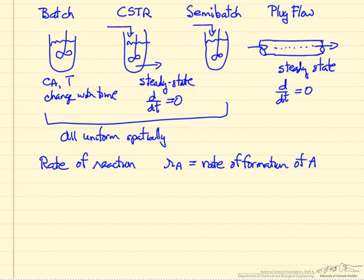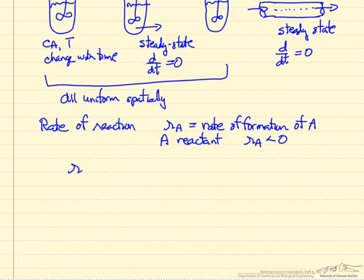If we're using up A, if A is our reactant as in the example above, then R sub A is going to be less than zero. So something important to keep in mind, and can sometimes be confusing.